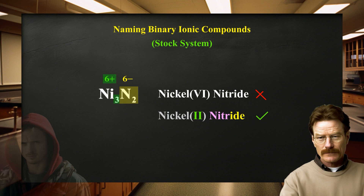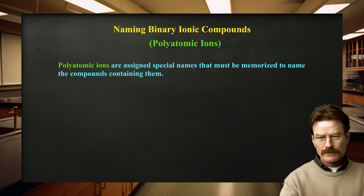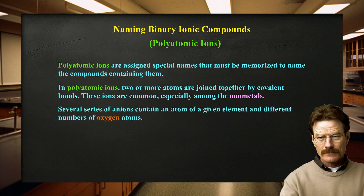We need to discuss how to name ionic compounds that contain polyatomic ions. Polyatomic ions are assigned special names that must be memorized to name the compounds containing them. In polyatomic ions, two or more atoms are joined together by covalent bonds. These ions are common, especially among the nonmetals.